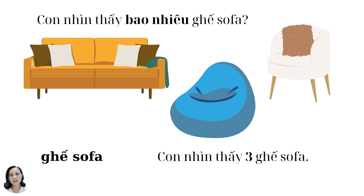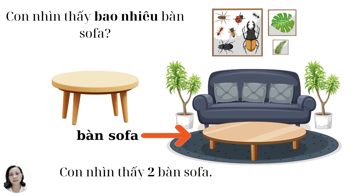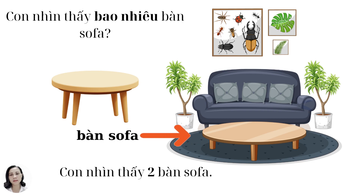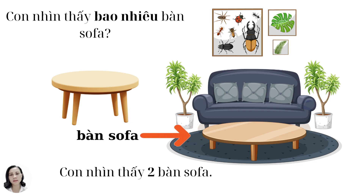Con nhìn thấy ba ghế xô pha. Very good. We learned ghế xô pha already, right? And the little table to go with ghế xô pha, we call bàn xô pha. Do you understand? Yes, easy, right?